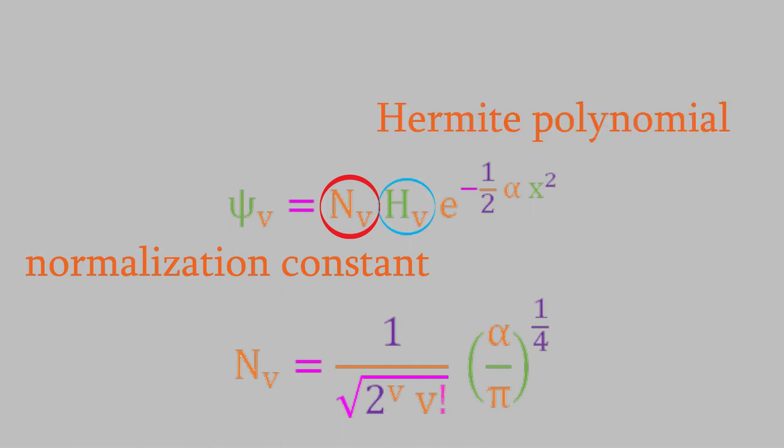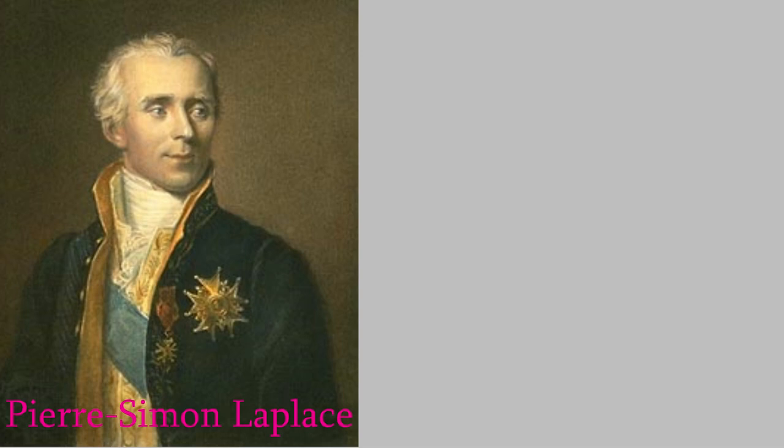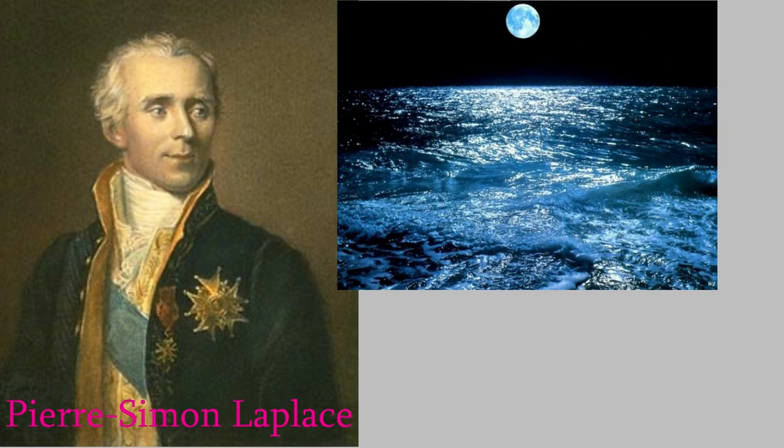Finally, Hv is called a Hermite polynomial. Hermite polynomials are a group of functions that depend on an integer, in this case v, and they appear in many different applications in physics and mathematics. They were discovered by the French mathematician Pierre-Simon Laplace in 1810. Laplace was interested in many different areas of physics and mathematics, and he developed one of the first complete theories to explain the tides, and was even the first person to conceive the idea of a black hole.